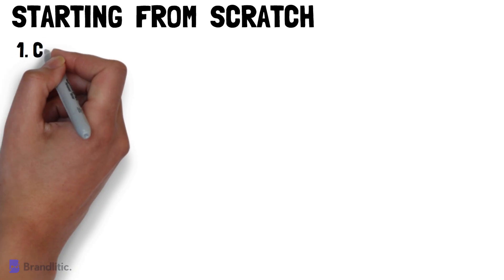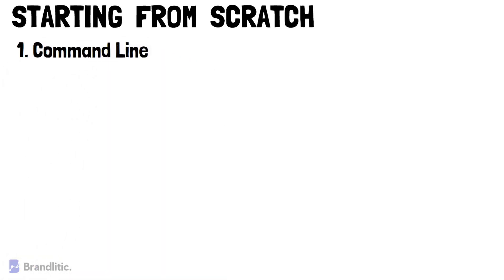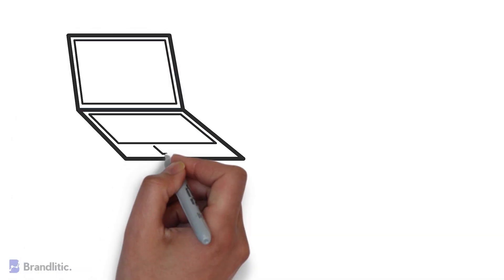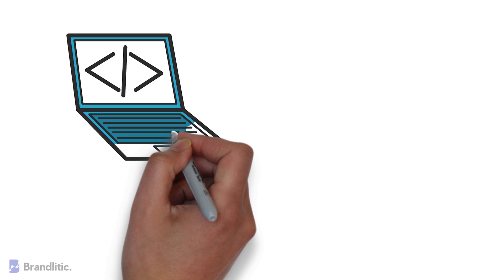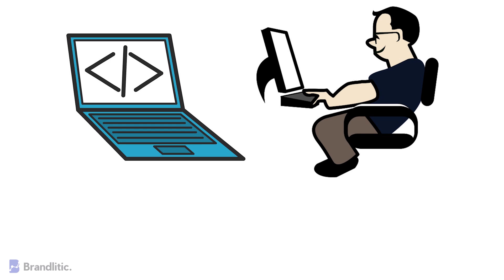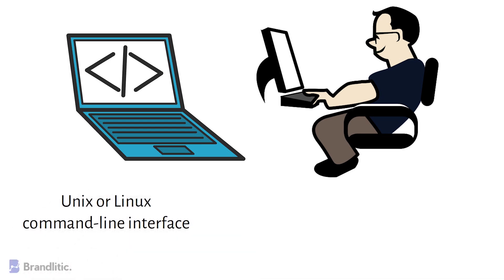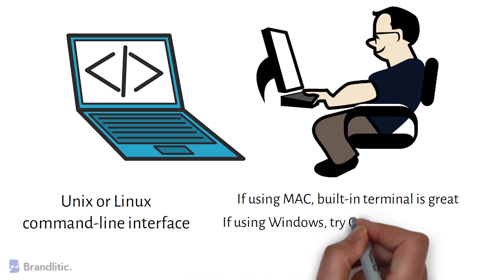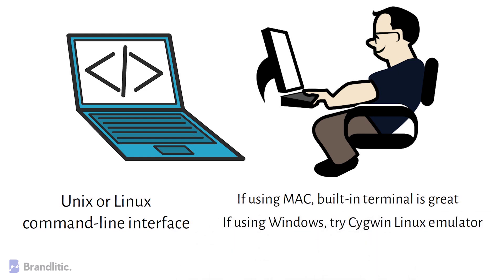1. Command Line. Getting used to the command line is essential for any budding software developer. At first it can seem geeky, but once you get used to it, you won't ever work without it. The best place to start is by learning on a Unix or Linux command line interface. If you have a Mac, the CLI is Unix-based, so the built-in terminal is great to start. If you're using a Windows machine, try using the Cygwin Linux emulator — the link is in the description below. The main point of learning a CLI is to interact with the computer using commands rather than a point-and-click interface.